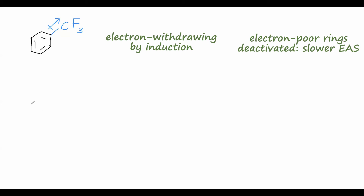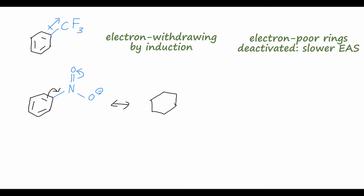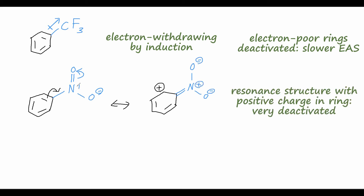We can also consider resonance effects in deactivating groups. With nitrobenzene, we can draw a resonance structure where one of the pi bonds in the ring comes up to form a double bond with nitrogen, and one of the nitrogen-oxygen double bonds becomes a lone pair on oxygen. This gives a resonance contributor with a positive formal charge in the benzene ring and negative formal charges on both oxygens of the nitro group. That positive charge can be delocalized to other carbons throughout the ring, making the ring very deactivated towards EAS reactions.